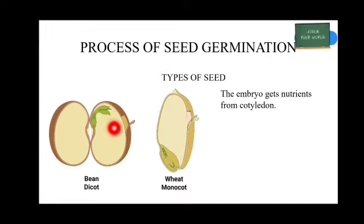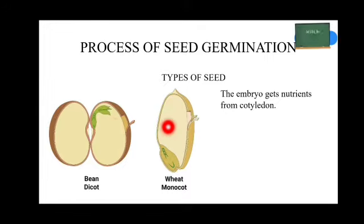Dicotyledon seeds are also called dicots. Examples of monocotyledon seeds are corn, wheat, rice, etc. Now, let's learn the process of seed germination.